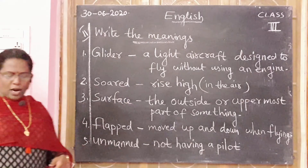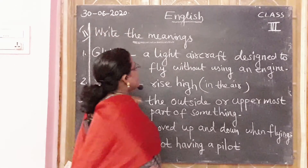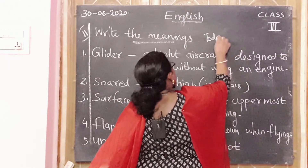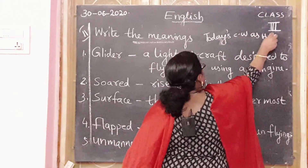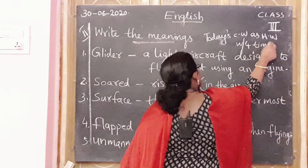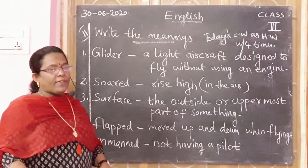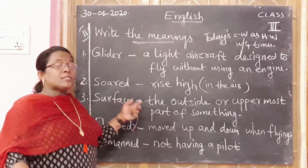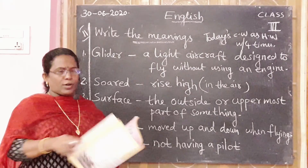Write down children, write down. Now take your diary, today's date, put the date. Then English — today's classwork as homework. Write four times. Return work, study very well. Tell and write everybody. Test books — you can tell.